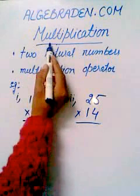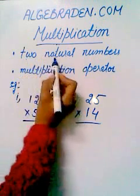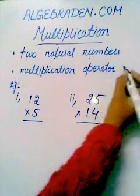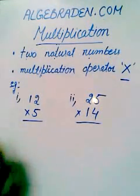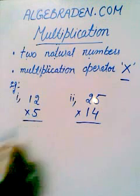Multiplication. For multiplication of natural numbers, we need two natural numbers and a multiplication operator. For example, 12 multiply by 5.